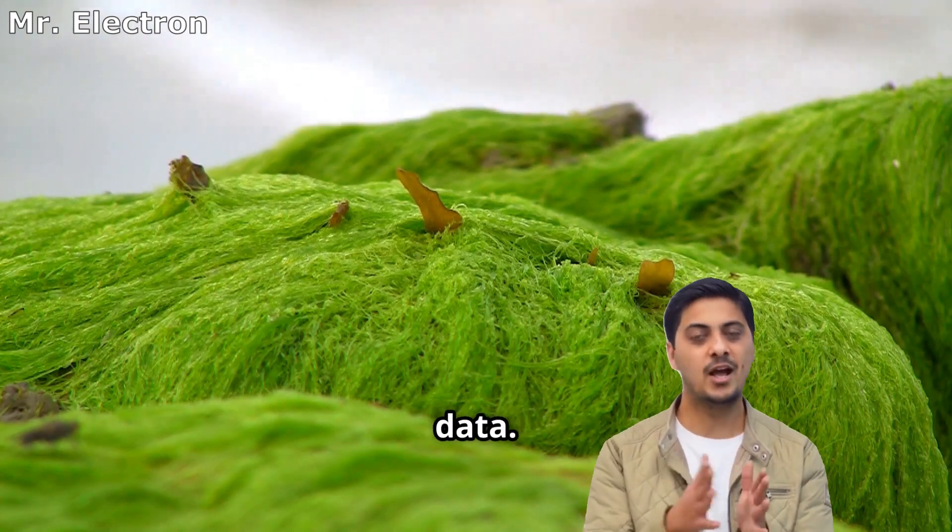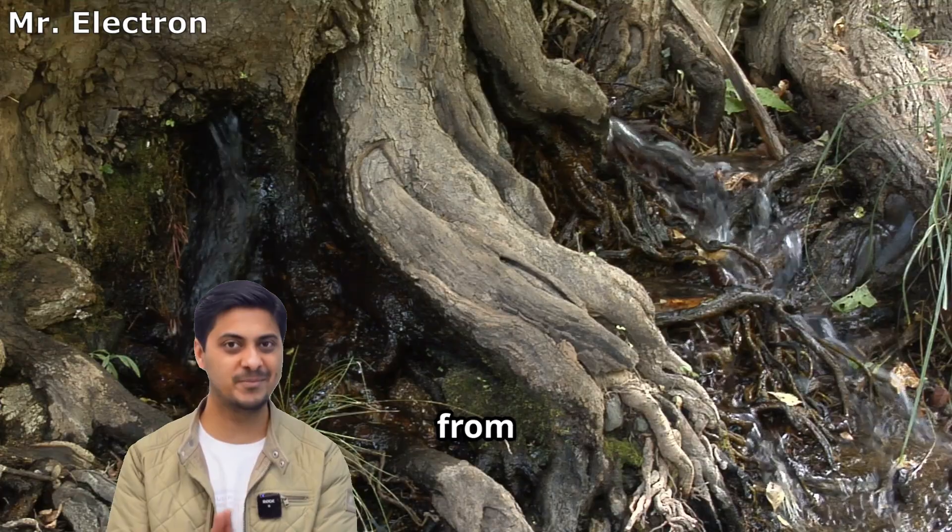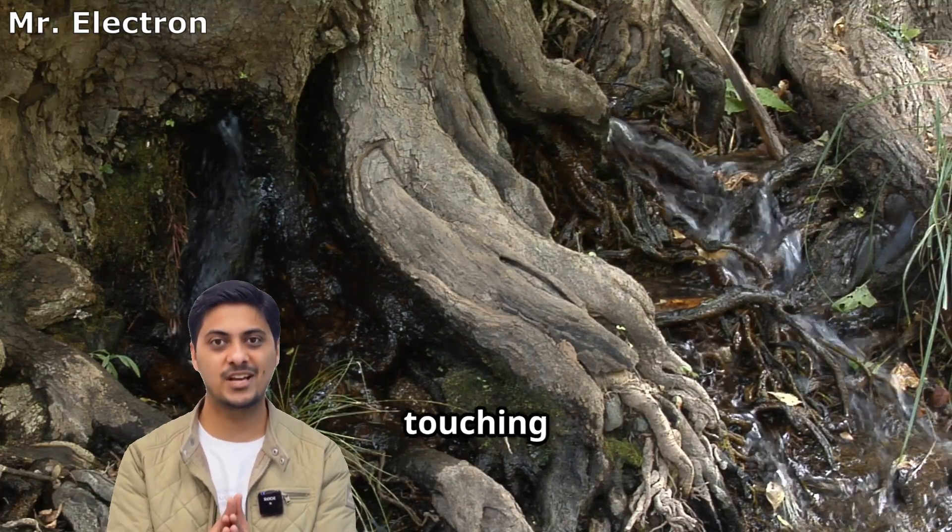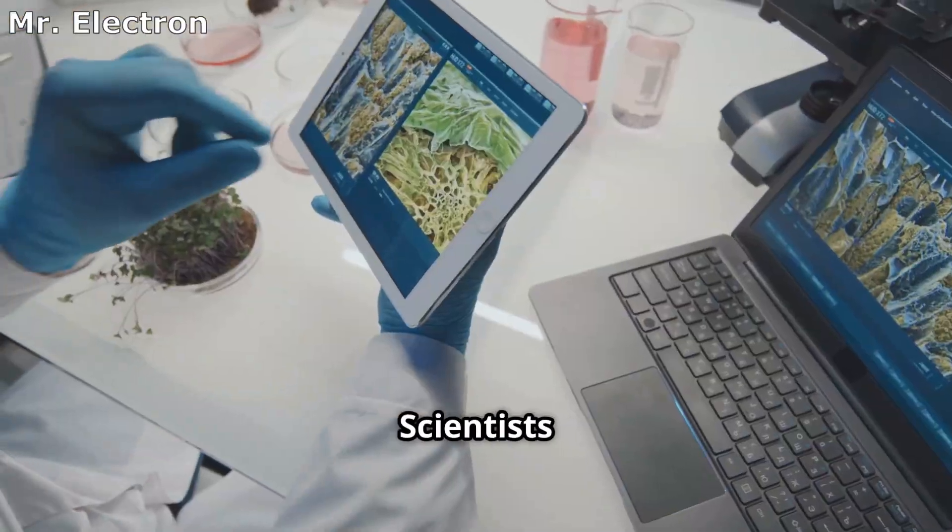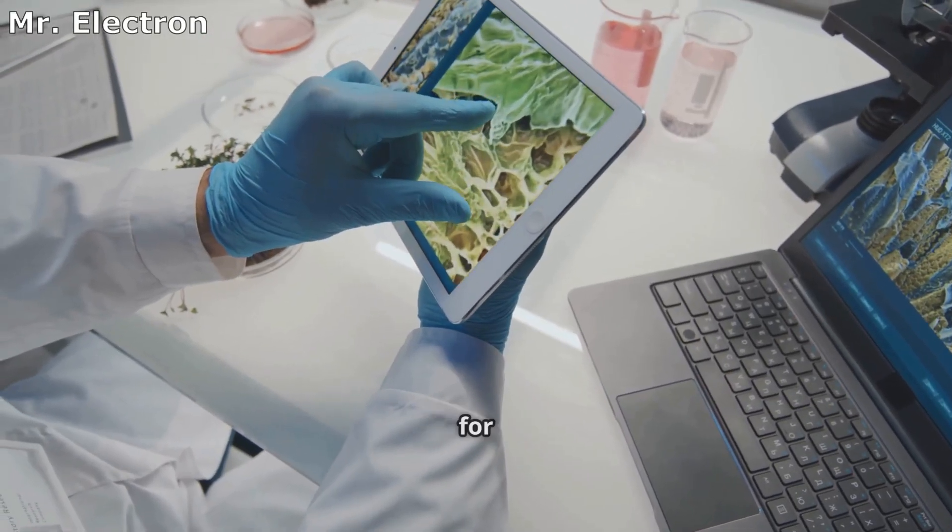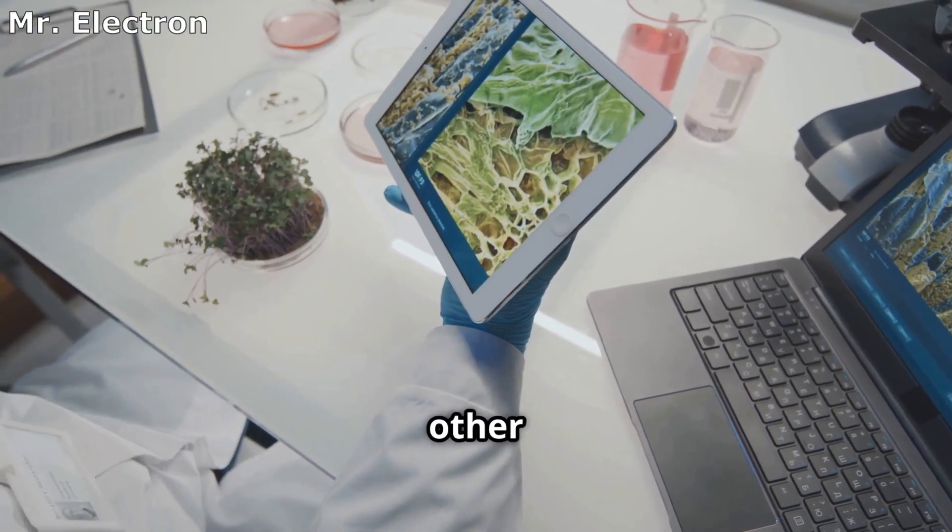According to research data, root electrode devices harvest energy from natural root metabolism without touching plant tissue. Scientists have documented specific voltage outputs for tomatoes, corn, beans, and other crops.